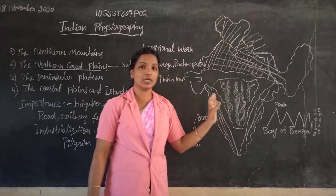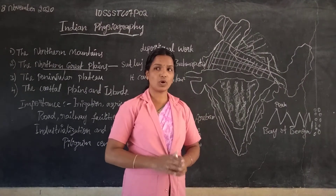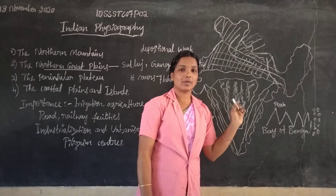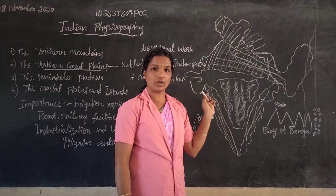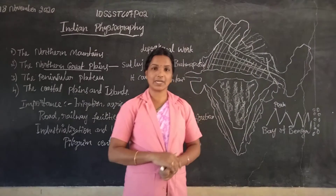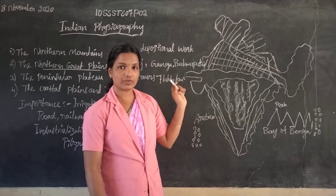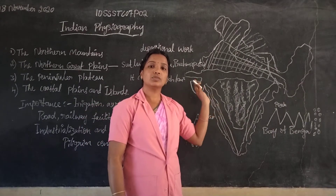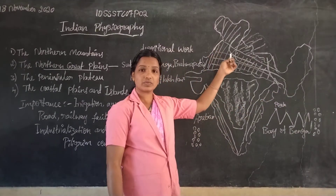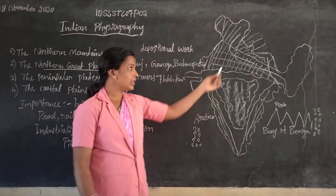What is meant by perennial river? Perennial rivers means the rivers are filled with water throughout the year. Some rivers are not perennial — non-perennial rivers dry up during the summer season. Perennial rivers means the rivers are filled with water throughout the year. The rivers flowing in the Northern Great Plains are perennial rivers.